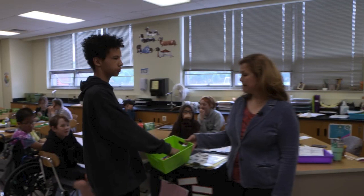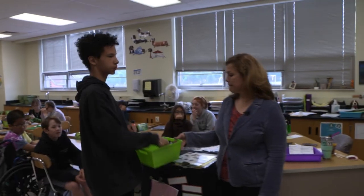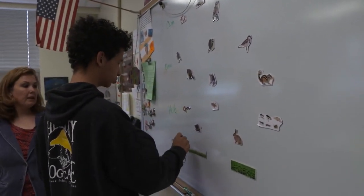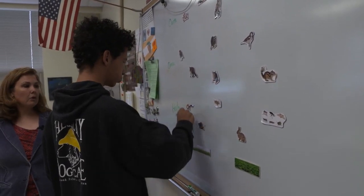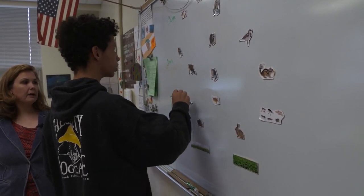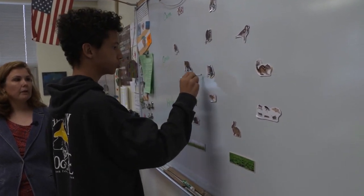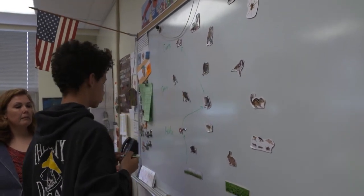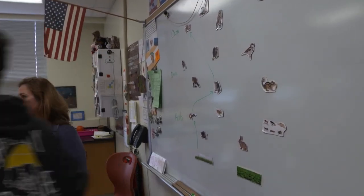A student walks up to the front of the room. He grabs a marker and goes to the whiteboard. He is going to use the marker to draw arrows on the whiteboard, showing relationships between the various parts of the food chain. So you said we're going to start with the grass, right? Let's start with the grass because we have to start at the bottom. You said that the worm eats the grass. And who's going to eat the worm? We have our first food chain done.